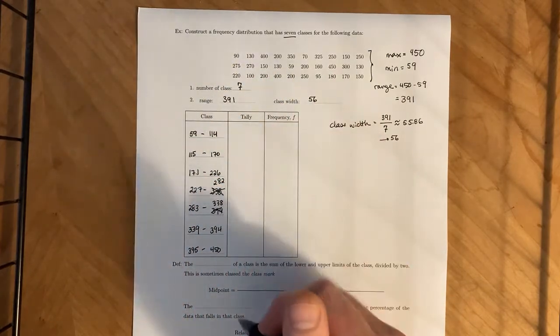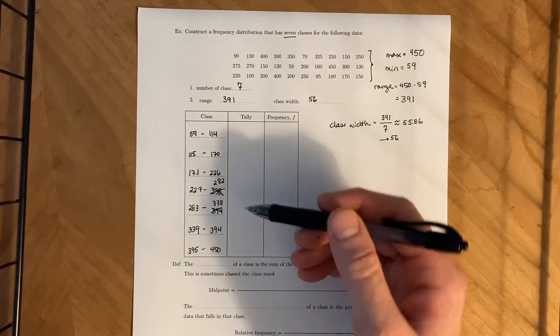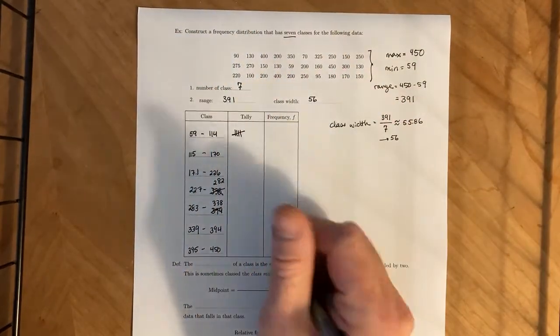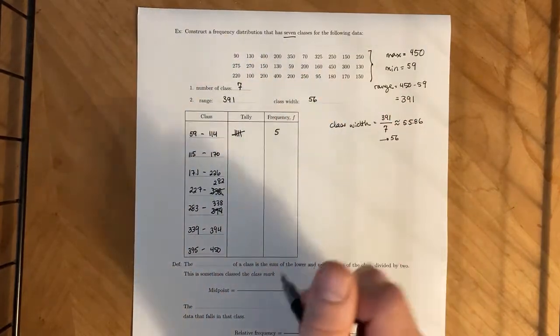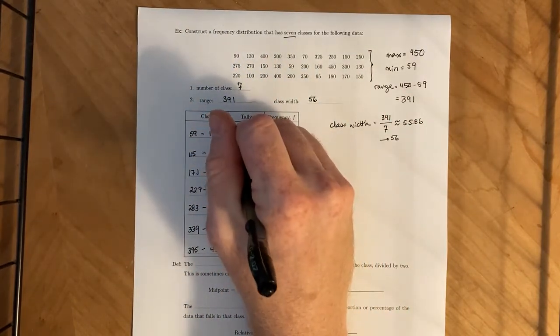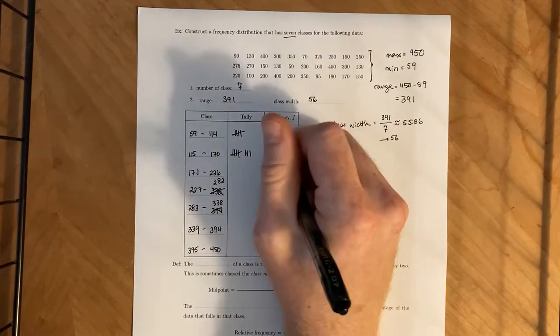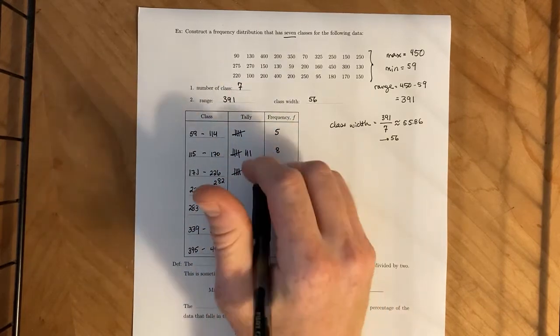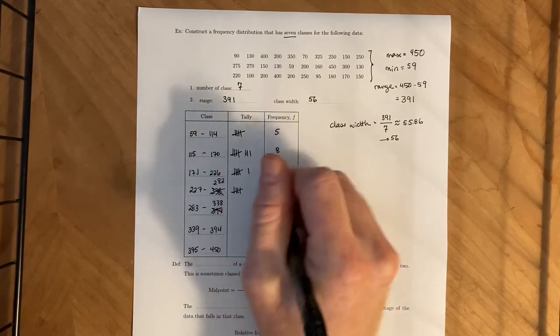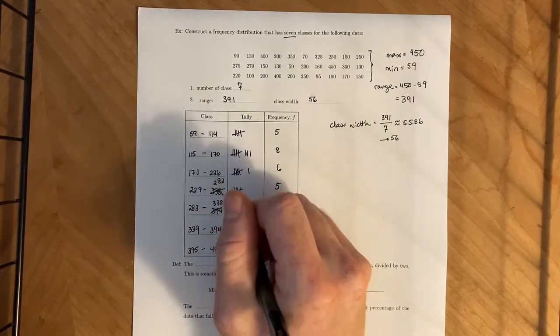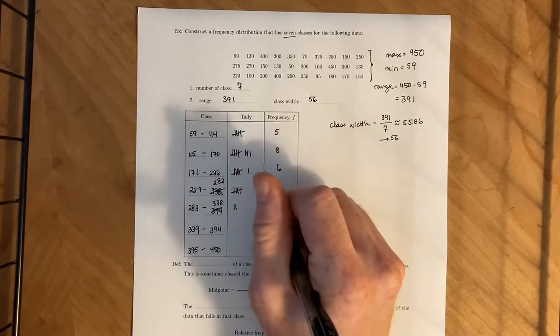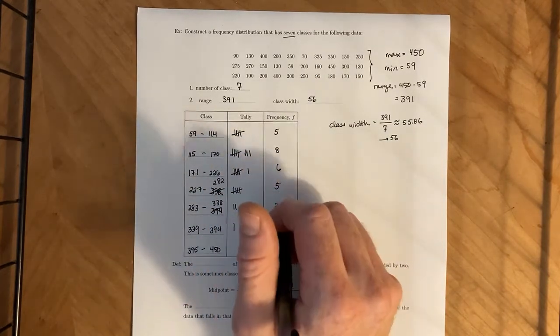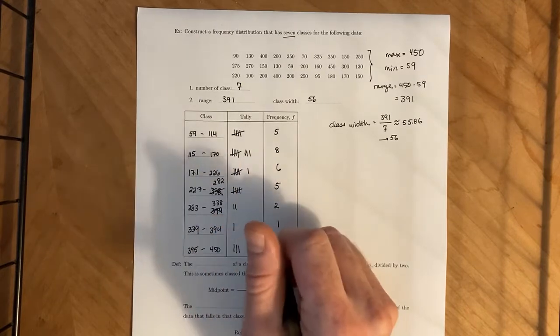And now I'm not going to bore you with the whole tally thing. If you want, take a second, pause the video, count up each thing. But essentially, we're going to have five in here from 59 to 114. We'll have eight between 115 and 170. Six for the next class. Five for the next. Two between 283 and 338. Only one between 339 and 394. And we'll have three in this upper class.